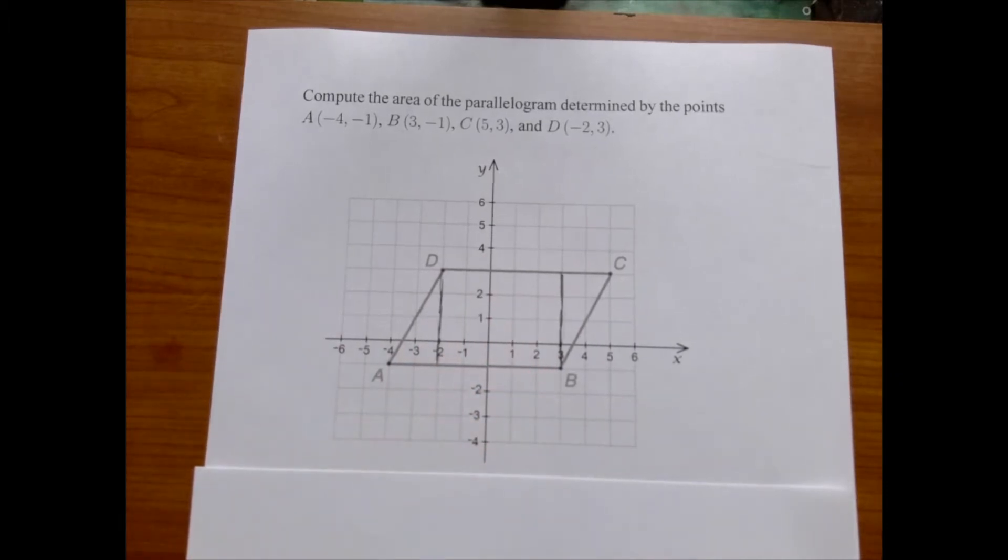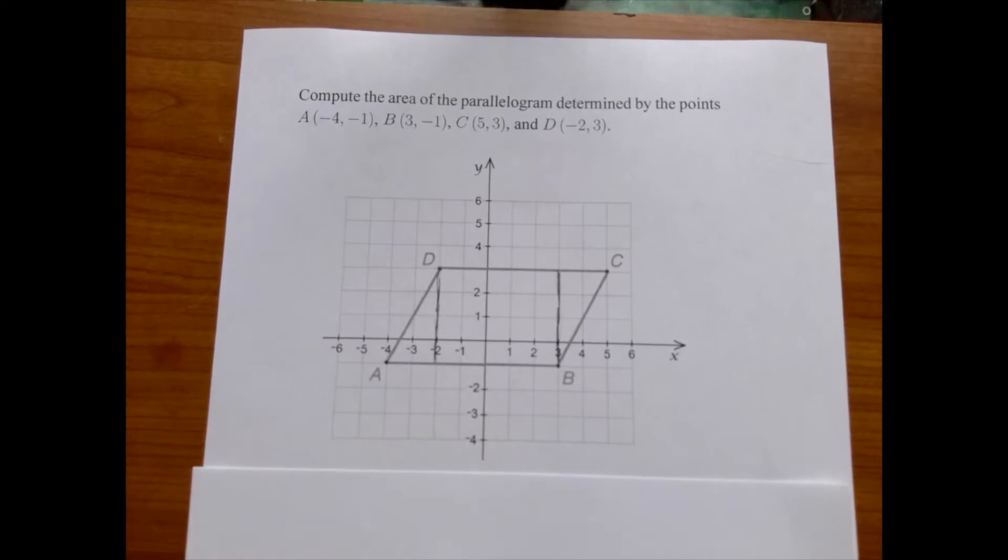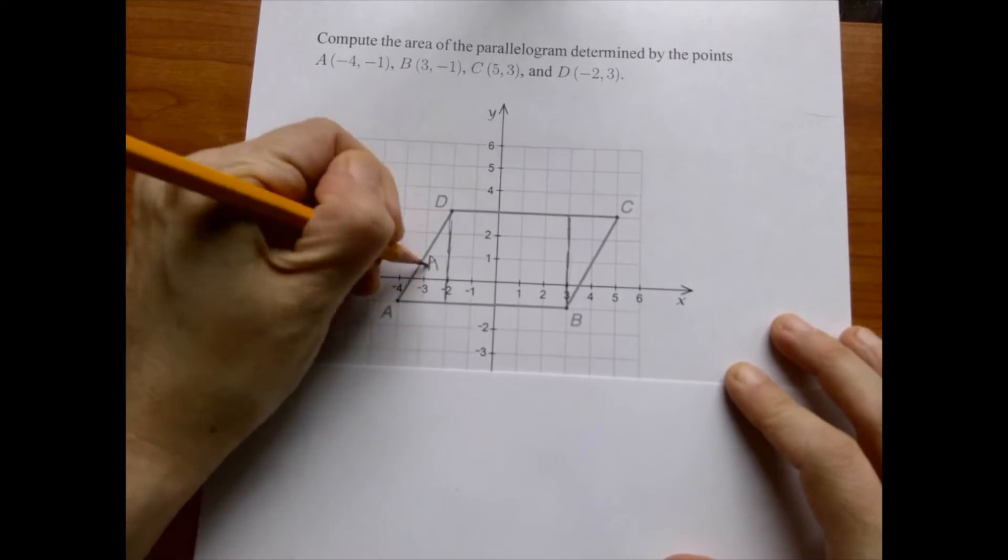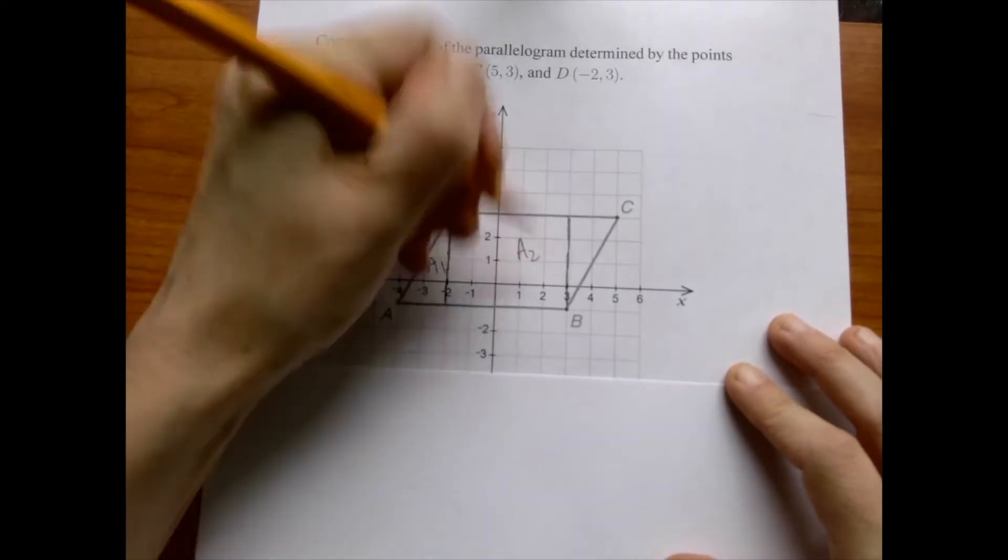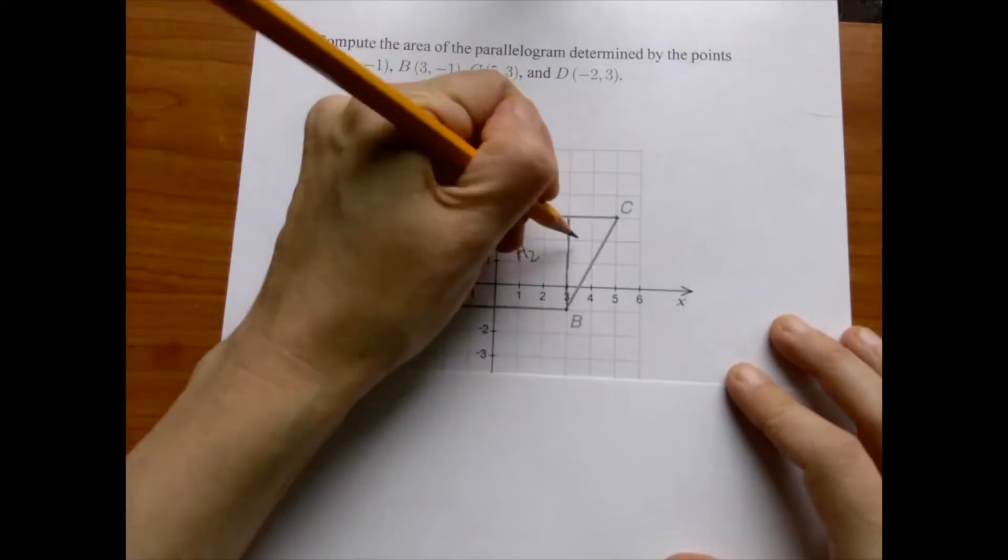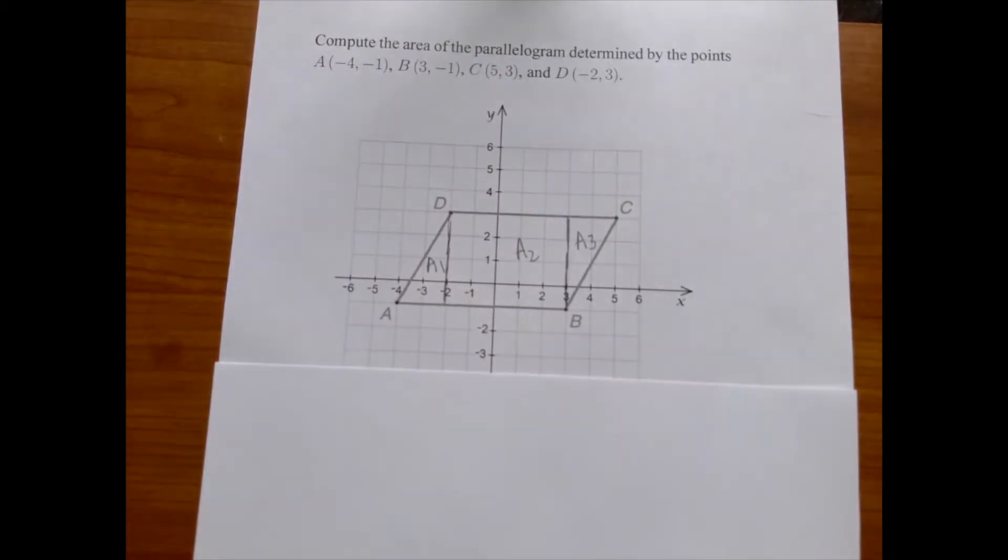We're just simply going to compute those three areas separately and add them. So let's say this is the first area, second area. And suppose we didn't notice that those are the same, that's area three, the third area.